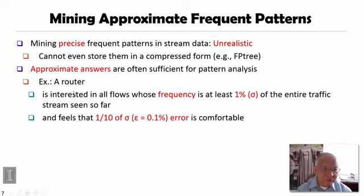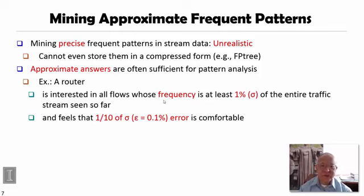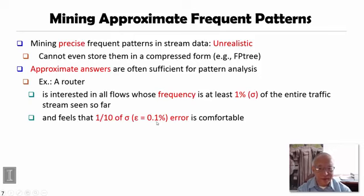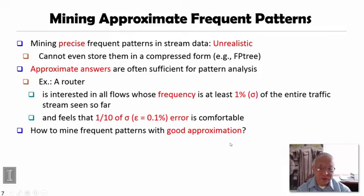For example, at a network router it could be interesting to find flows whose frequency is at least one percent of the entire traffic stream seen so far. If you identify those frequent-occurring flows, you'd be pretty satisfied. On the other hand, if the error rate is 0.1 percent, you'd feel very comfortable that you're doing a good job. In that case, we can develop very efficient algorithms to mine such patterns with good approximations.